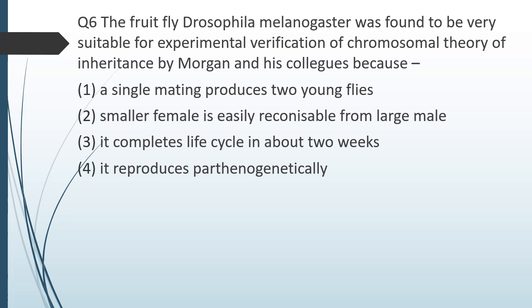Question number six: the fruit fly Drosophila melanogaster was found to be very suitable for experimental verification of the chromosomal theory of inheritance by Morgan and his colleagues because — a single mating produces two young flies, smaller female is easily recognizable from larger male, it completes its life cycle in about two weeks, or it reproduces parthenogenetically? The correct answer is option three: it completes its life cycle in about two weeks, so in a very short duration, a large number of generations could be studied.